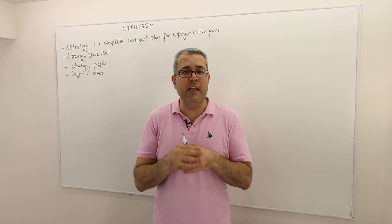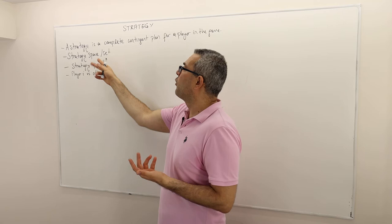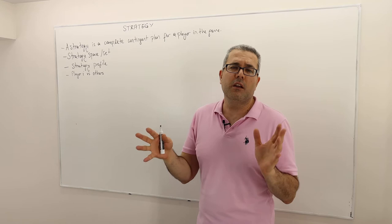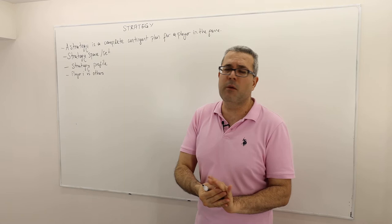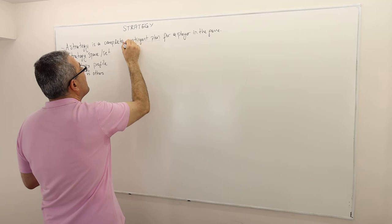So once again, the strategy is, therefore, in any extensive form game, formally, a bit more formally, is a complete contingent plan for a player in the game. Let me repeat, a strategy is a complete contingent plan for a player in the game. What do we mean by complete contingent plan or just contingent plan?